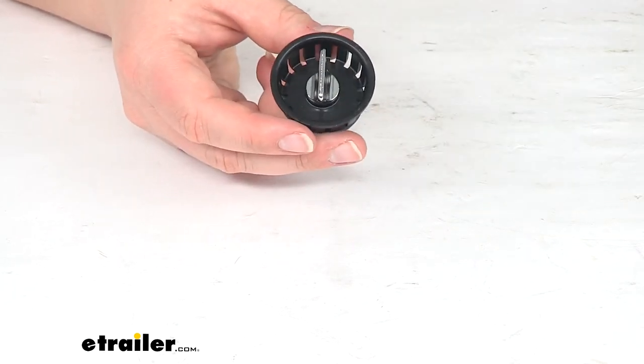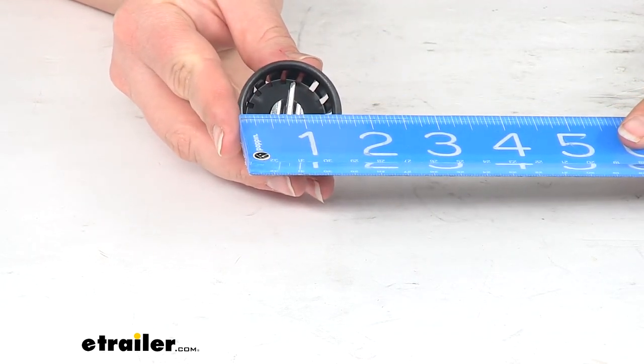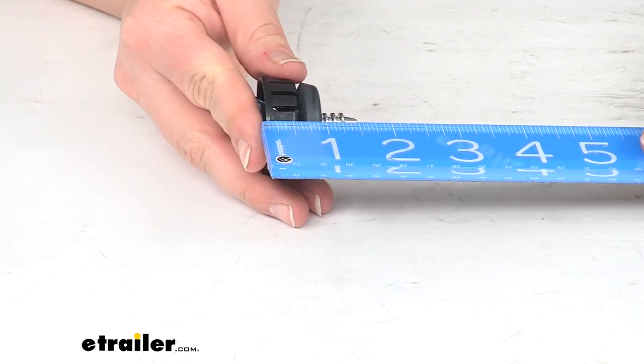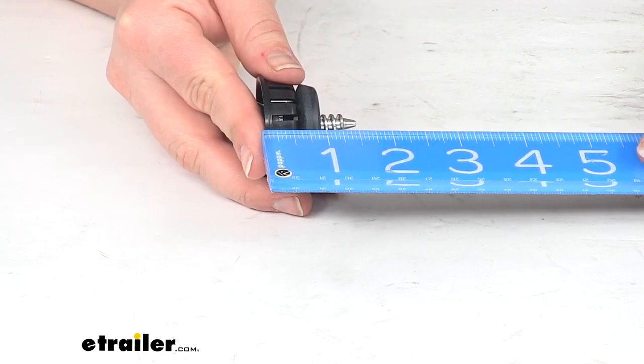As far as the overall measurement here, diameter is going to be about one and five-eighths inches. Total length is about an inch and five-eighths.